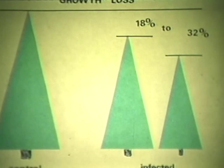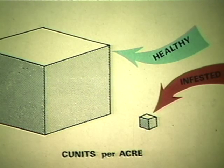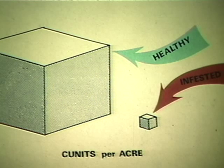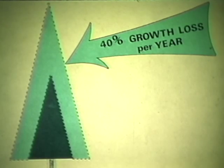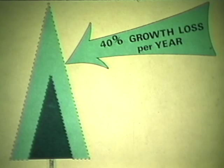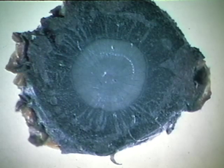Dwarf mistletoe causes major damage to our forests. It can retard their growth and affect wood quality. In five lodgepole pine stands ranging from 37 to 117 years in age, growth losses were 18 to 32 percent. A 100-year-old stand, affected for 70 years, averaged only 3 cunits, compared with 24 cunits in healthy stands. In a mature western hemlock stand, it was estimated the growth loss was 40 percent; infected trees were 4.3 meters shorter than control trees of the same diameter. Dead tissue produced by dwarf mistletoe allows stain and decay fungi to enter the tree, causing even greater damage.